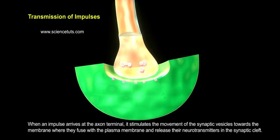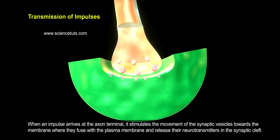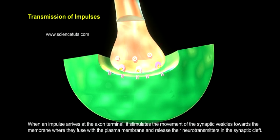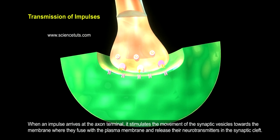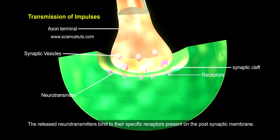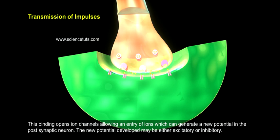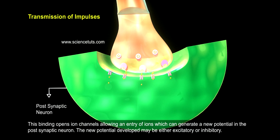When an impulse arrives at the axon terminal, it stimulates the movement of synaptic vesicles towards the membrane, where they fuse with the plasma membrane and release their neurotransmitters into the synaptic cleft. The released neurotransmitters bind to their specific receptors present on the postsynaptic membrane. This binding opens ion channels, allowing entry of ions which can generate a new potential in the postsynaptic neuron. The new potential developed may be either excitatory or inhibitory.